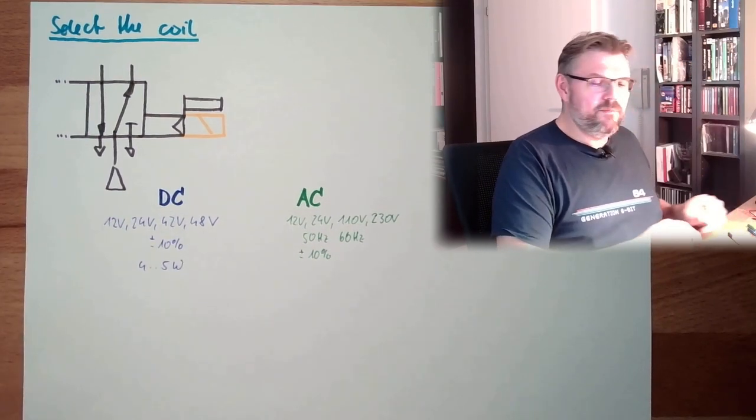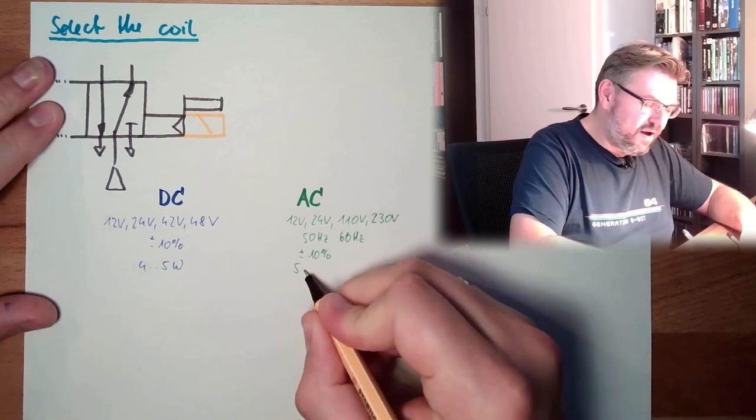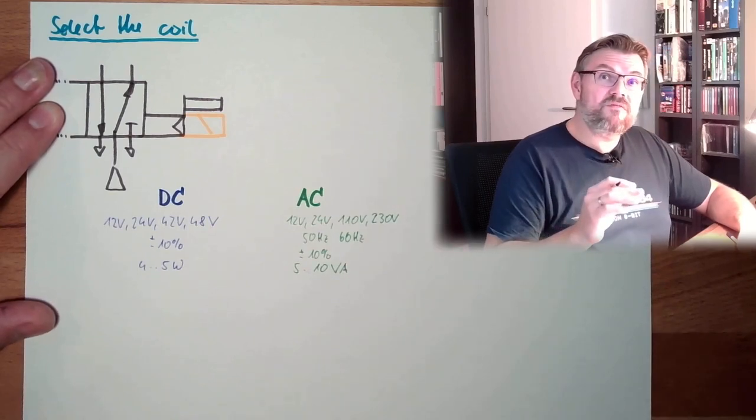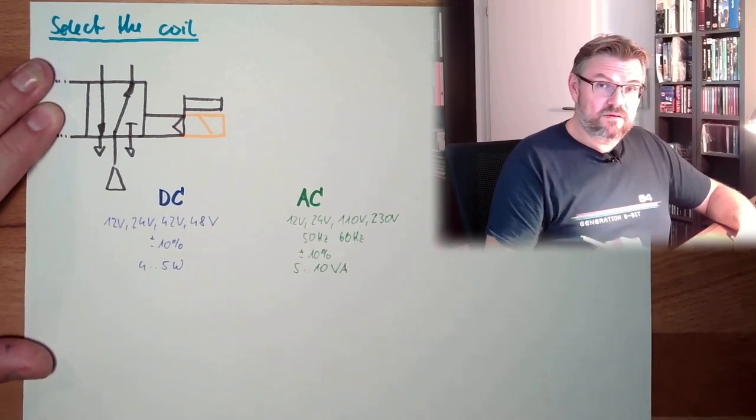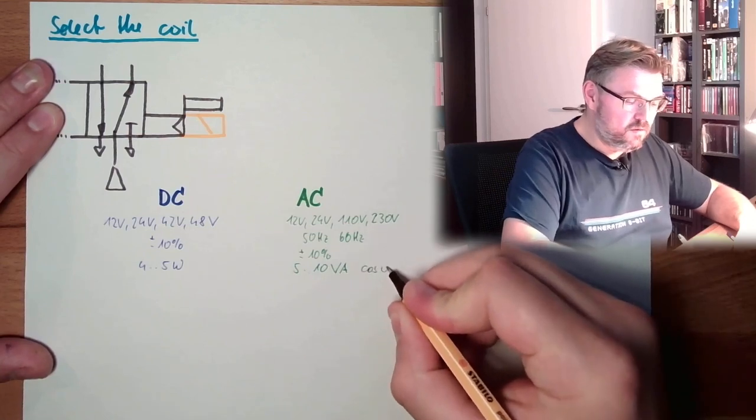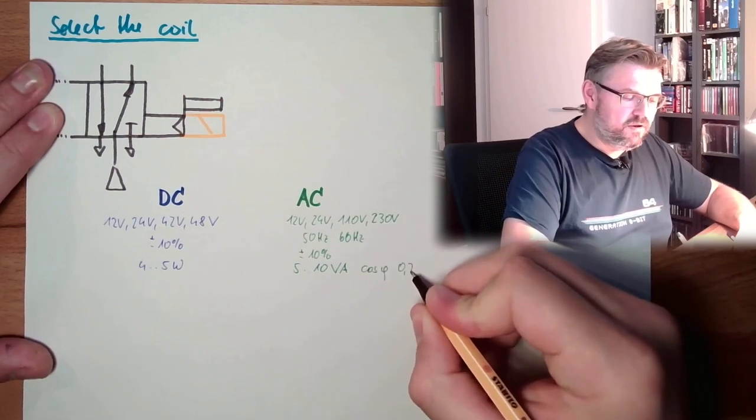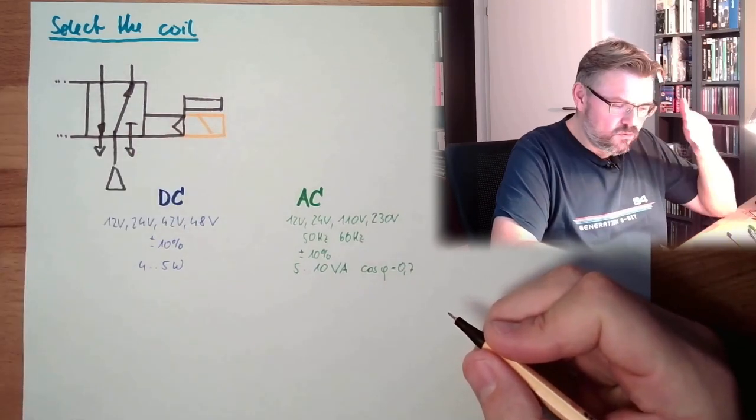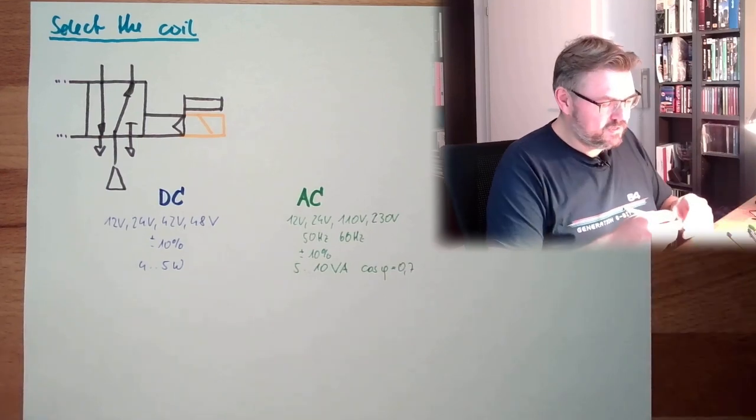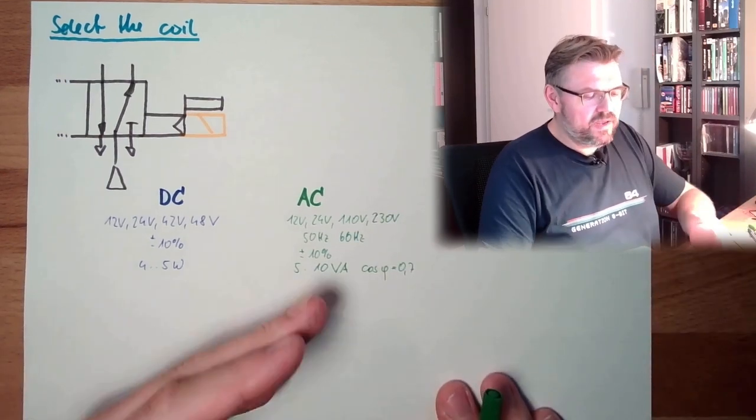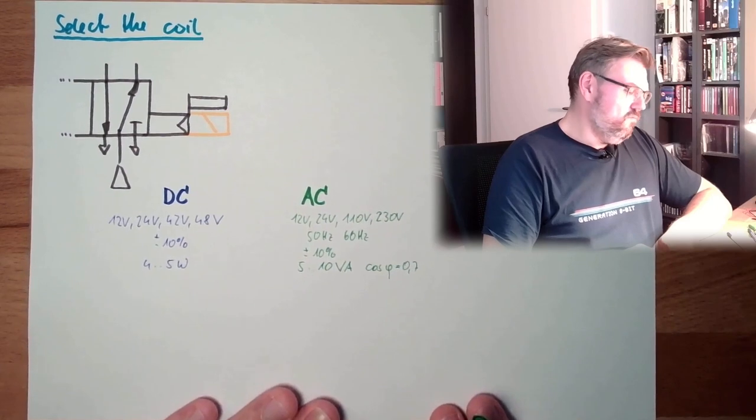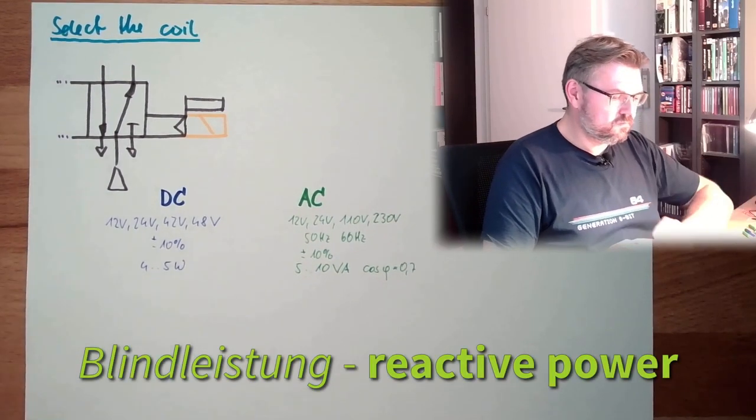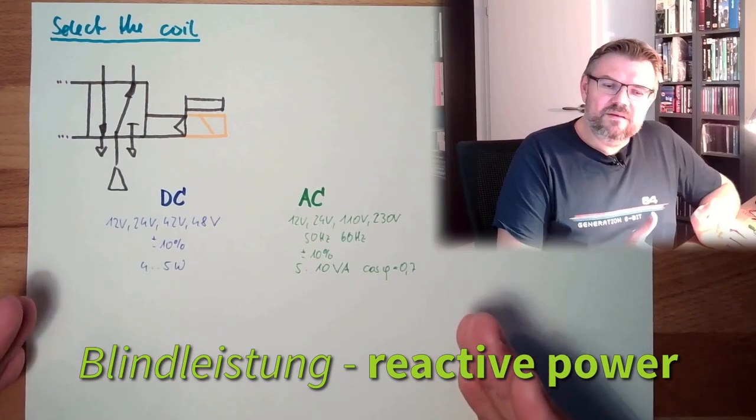Here, we're a little bit above. So we have somewhere between 5 and 10 volt ampere, because there we have also a power factor. The power factor, cos phi, is around 0.7 here. Because it's a coil, it cannot be 1. So only 70 percent of the power consumed by AC are also there for switching. The rest is just reactive power. These are typical values, alright?